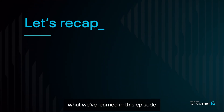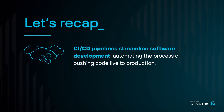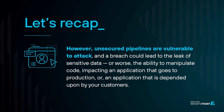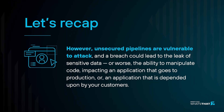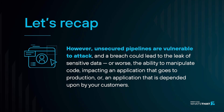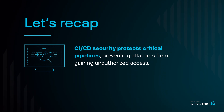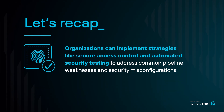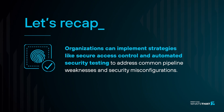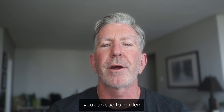Let's recap what we've learned. CI/CD pipelines streamline software development by automating the process of pushing code live to production. However, unsecured pipelines are vulnerable to attack, and a breach could lead to the leak of sensitive data or, worse, the ability to manipulate code impacting an application that goes to production or that is depended upon by your customers. CI/CD security protects critical pipelines, preventing attackers from gaining unauthorized access. Organizations can implement strategies like secure access control and automated security testing to address common pipeline weaknesses and security misconfigurations.